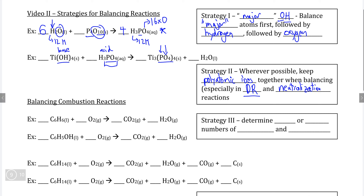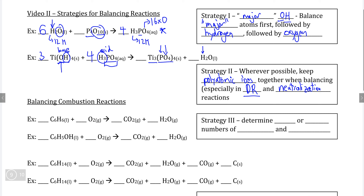Using our major hydroxide strategy, we look at elements and polyatomic ions that are not oxygen or hydrogen first. We see three titanium metal ions, so we balance them with a coefficient of three in the reactants. Likewise, there are four phosphate ions in the products, so we balance with a coefficient of four for phosphoric acid in the reactants. For water in neutralization reactions, hydrogen appears in one compound in the products but two in the reactants, so I like to count the oxygens used to make water.